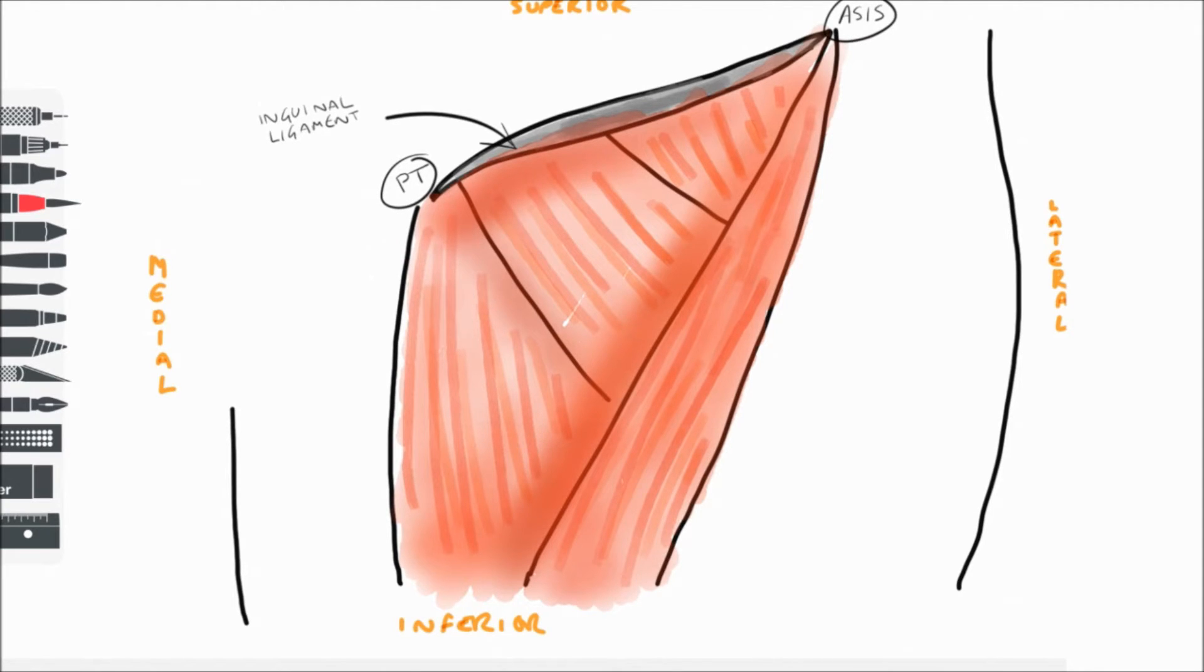Crossing the front of the thigh diagonally and over the top of all the other muscles, we have sartorius. Other muscles are iliopsoas—the common insertion of iliacus and psoas major—pectineus, and adductor longus medially.